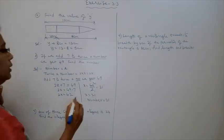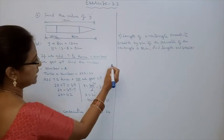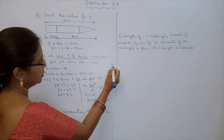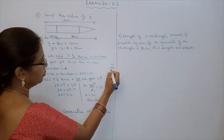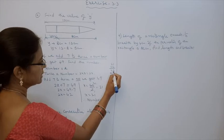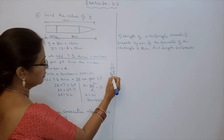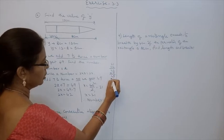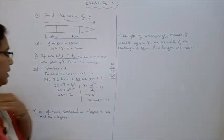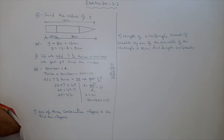Now, verification. Twice the number: 21 into 2 is 42. Plus 7 is 49. We got 49. Then our answer is correct.